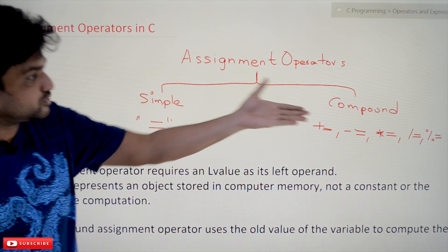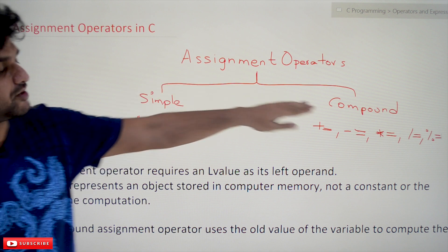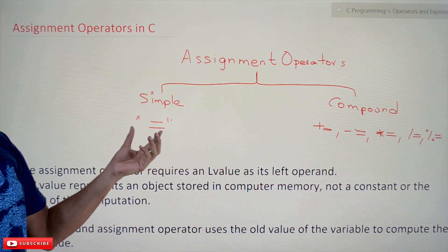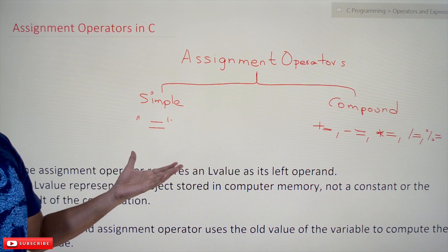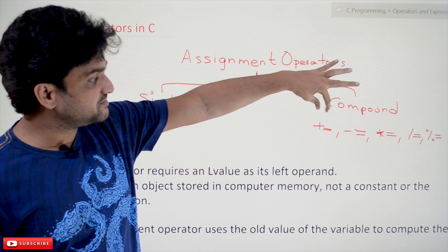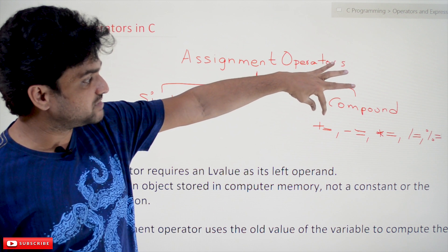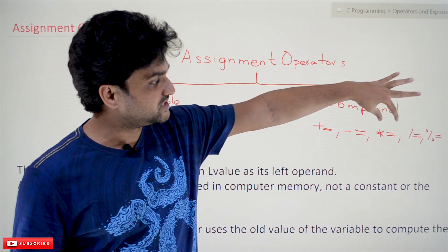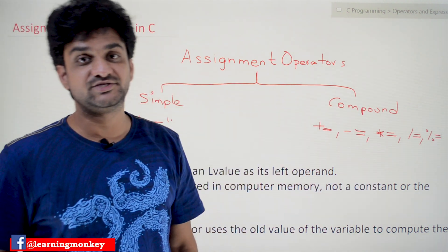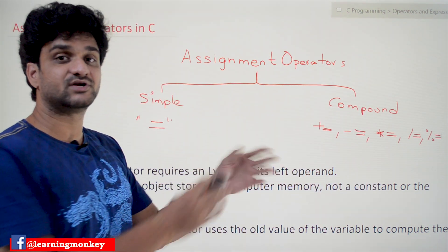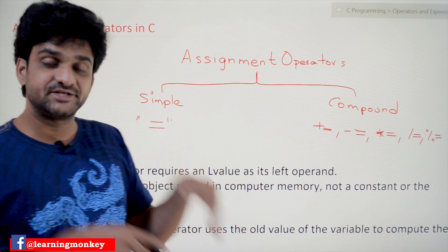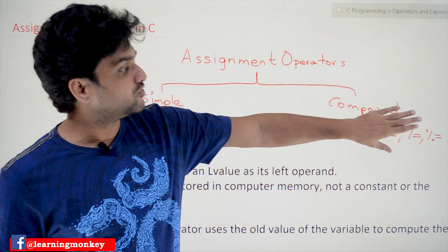Assignment operators are broadly divided into two types: simple and compound. In the simple type, we have the equals symbol. The compound assignment operators are: plus-equal, minus-equal, multiplication-equal, division-equal, and modulus-division-equal. There are many other compound assignment operators, but in this class we are going to focus on these.